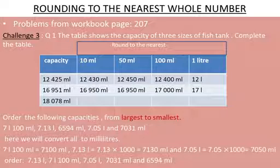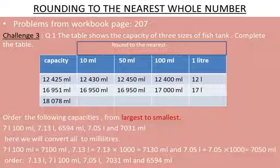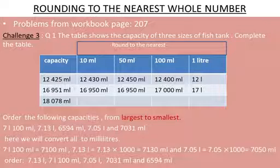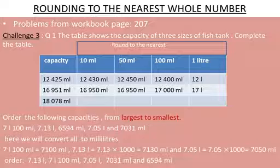The second fish tank's capacity is 16,951 milliliter. Rounding to 10 ml: 51 rounds to 50, so the answer is 16,950 ml. Rounding to 50 ml: 51 is very close to 50, so it rounds down to 50, giving 16,950 ml. Rounding to 100 ml: 951 rounds up to 1000, so add 1 to 16 to get 17,000 ml. Rounded to 1 liter, that is 17 liters.